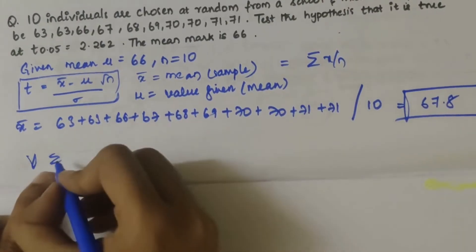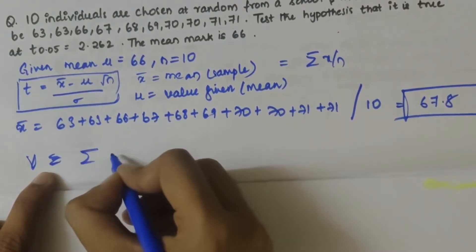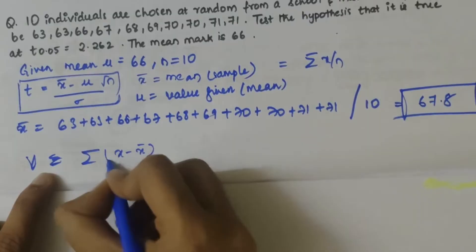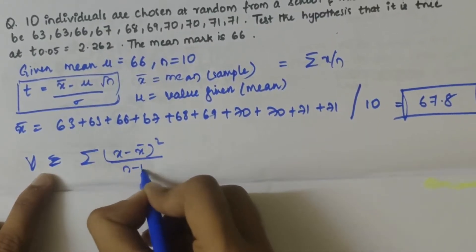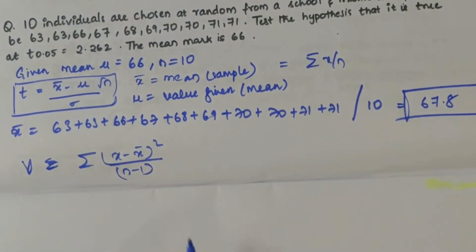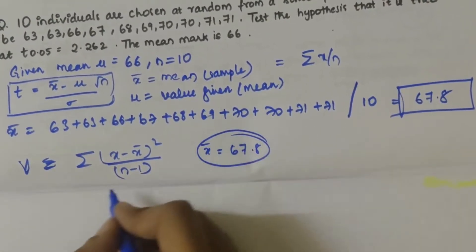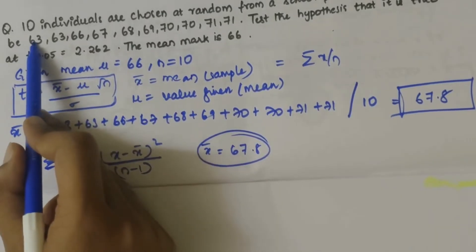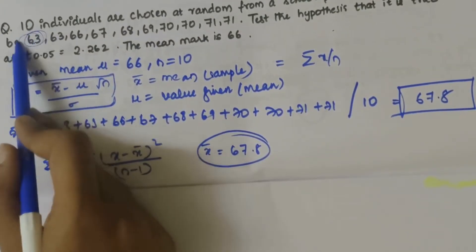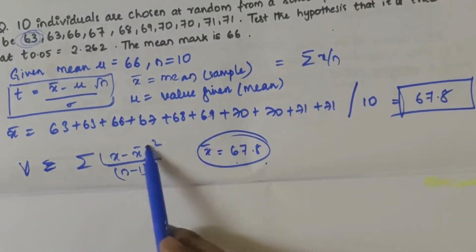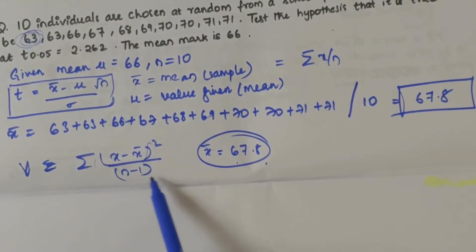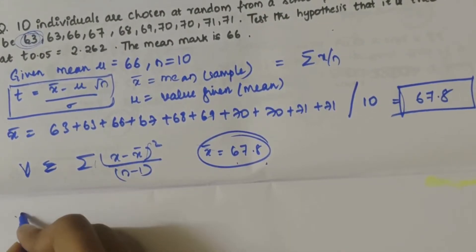Now we have to find out V value, the variance. To find variance we know that it is summation of (x minus x̄) squared by n minus 1. The x̄ value we know is 67.8, so we need to subtract each and every value given with 67.8, square it and divide by n minus 1.